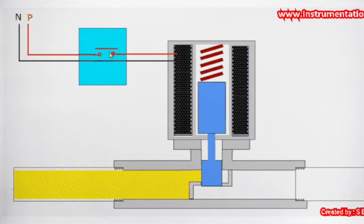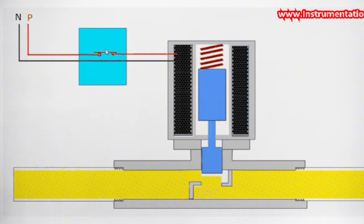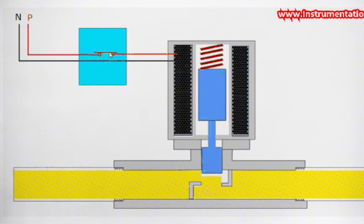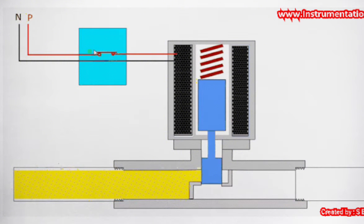To confirm whether the solenoid valves vent port is clean or not, operate the solenoid valve manually if the manual latching system is present or give a command through the control system to operate the valve.